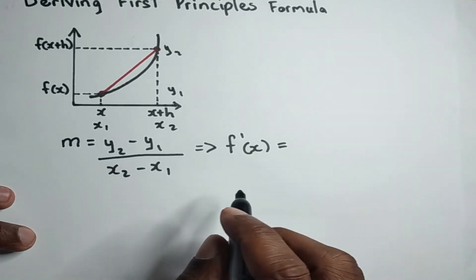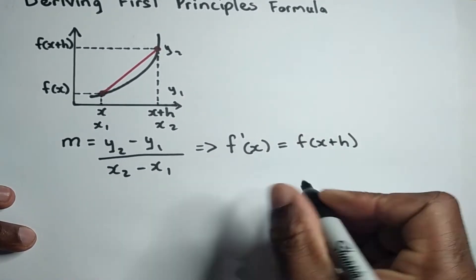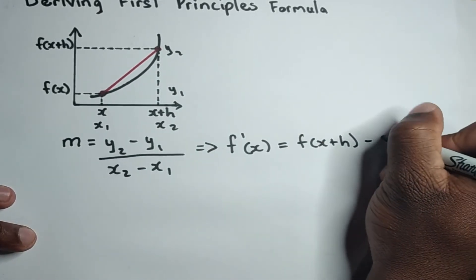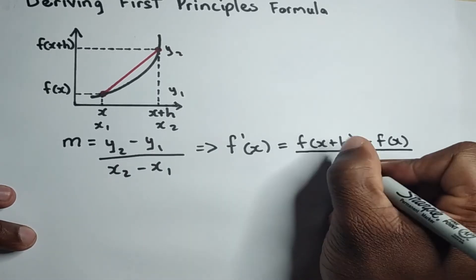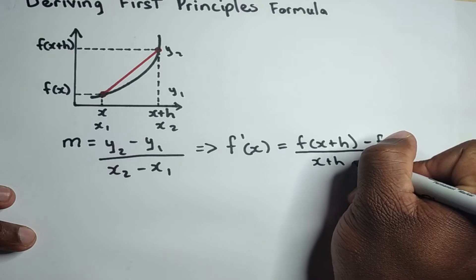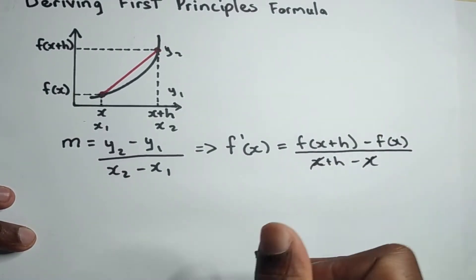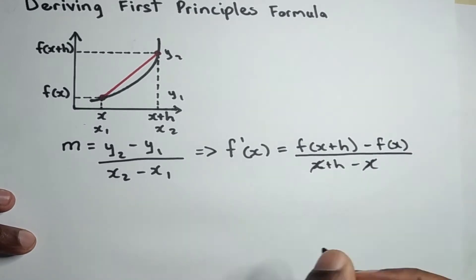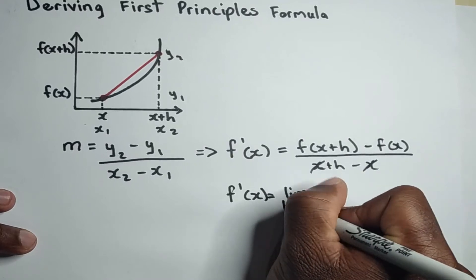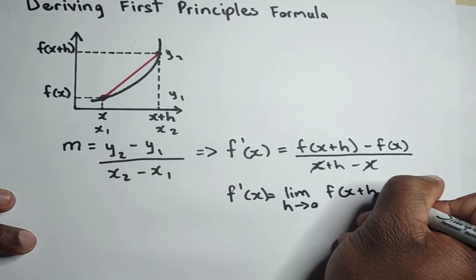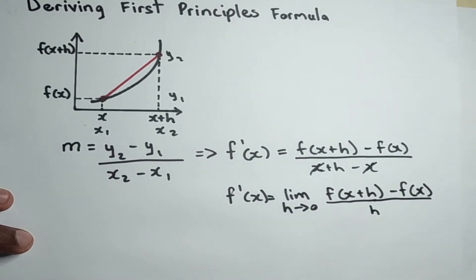We're going to fill in those values. Our y2 is f of x plus h, minus our y1 which is f of x, over x2 which is x plus h, minus our x1 which is x. If you look closely, x minus x cancels out, so we'll be left with h in the denominator. We then take this formula and find the limit as h approaches zero. That's where this formula comes from — that's pretty much where the first principle comes from.